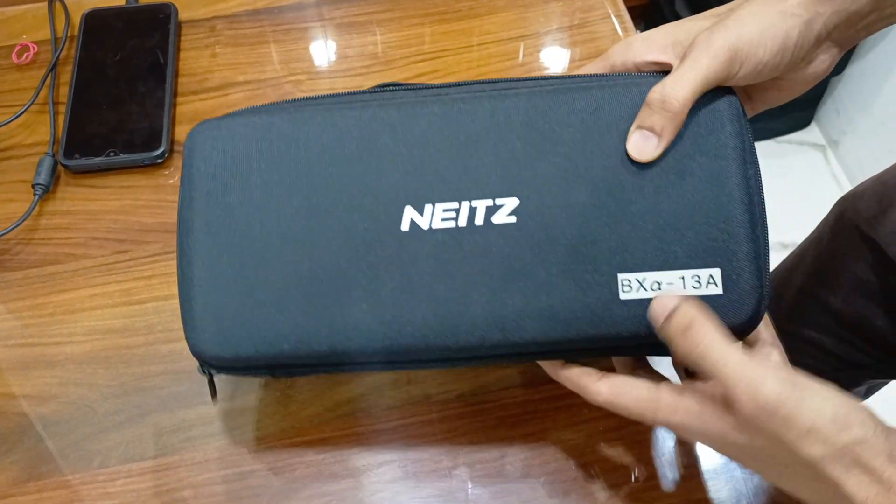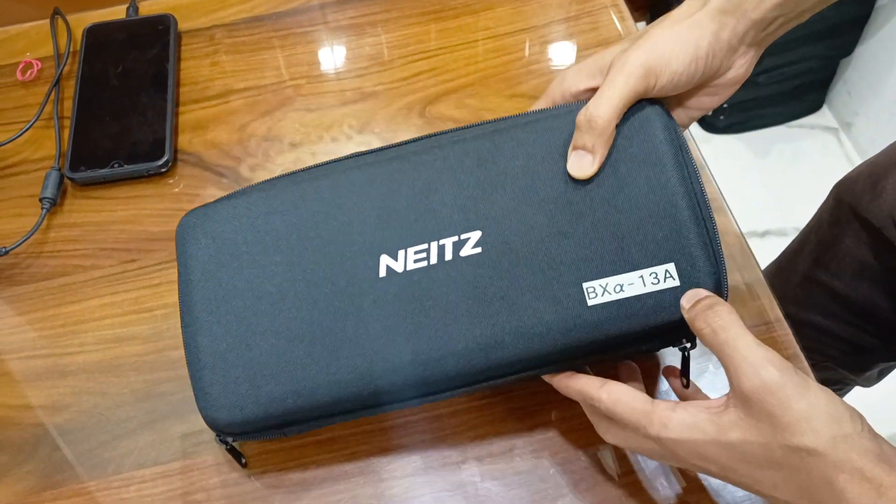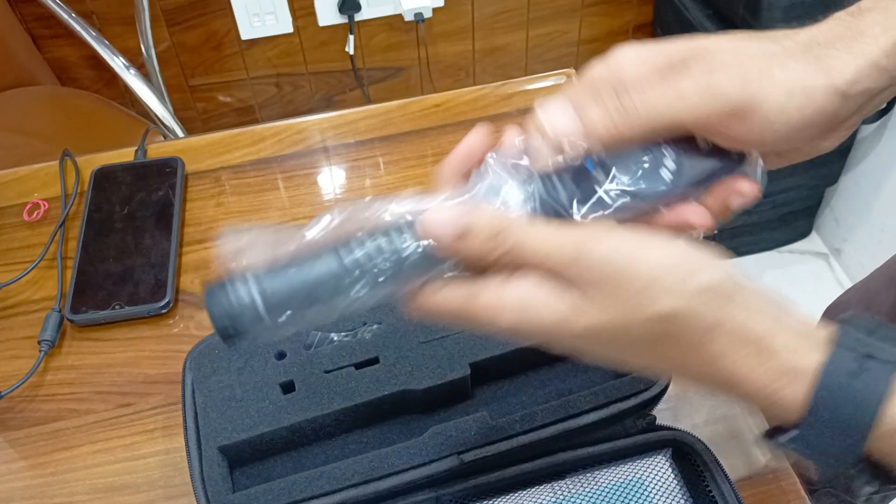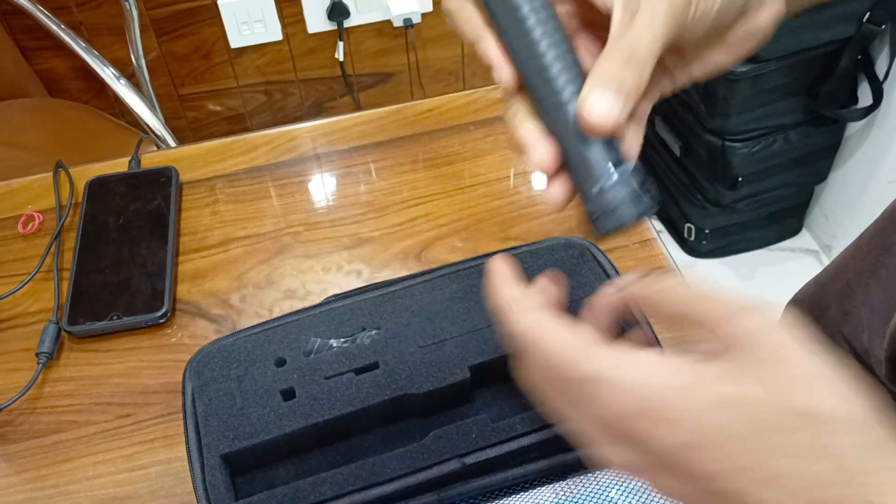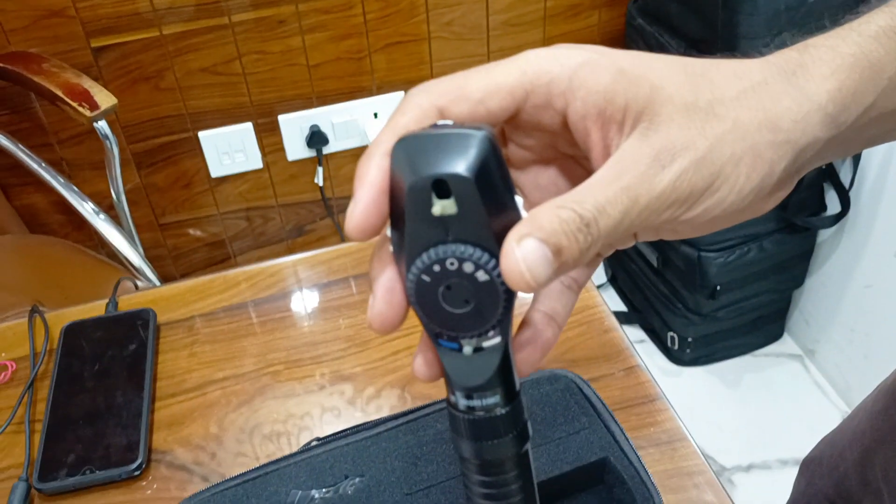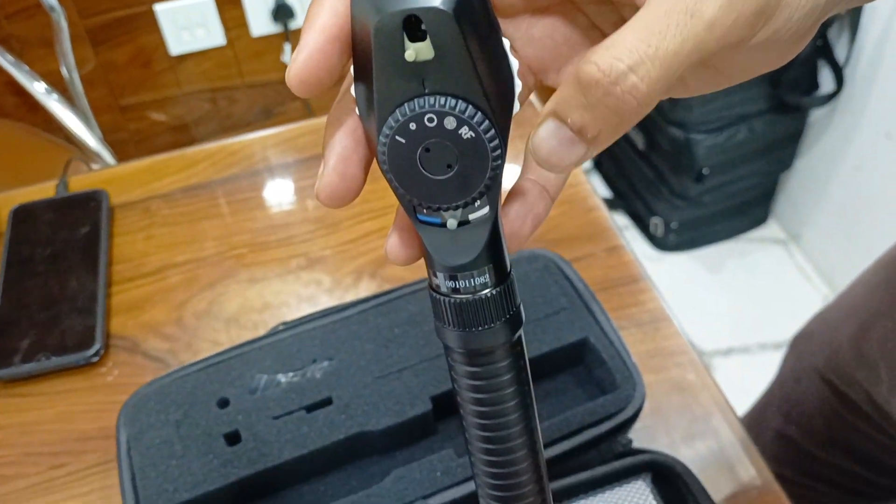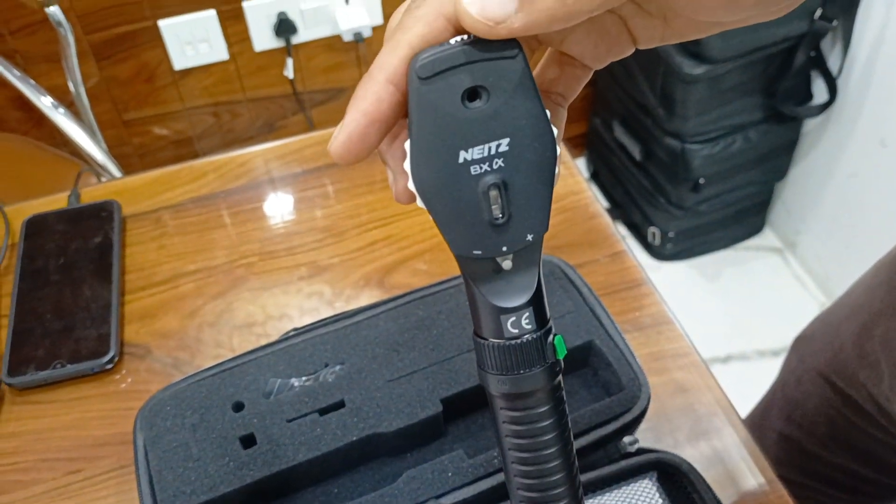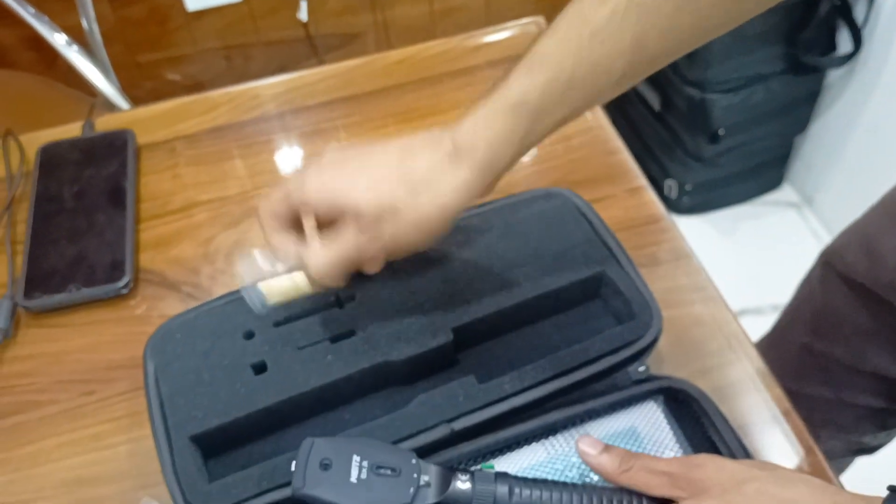Neitz ophthalmoscope B-alpha A-13A, now available in new pattern, with one extra bulb included.